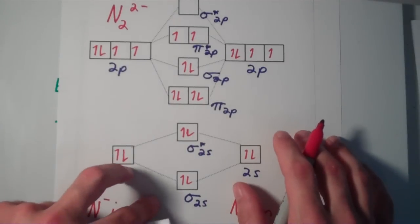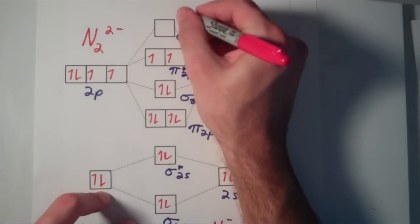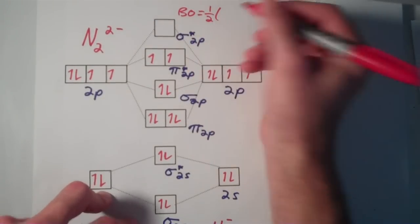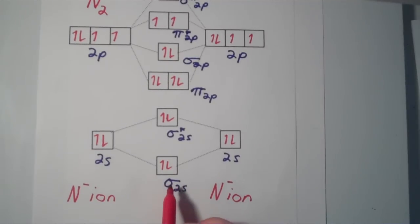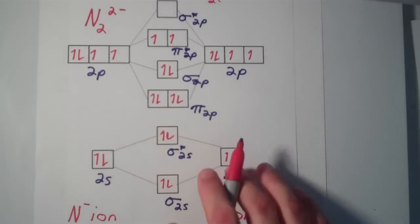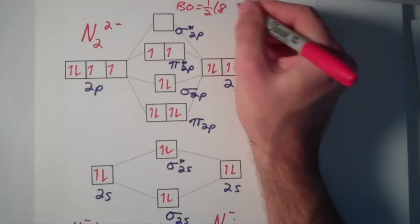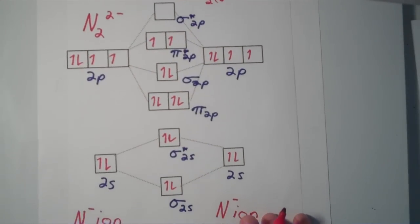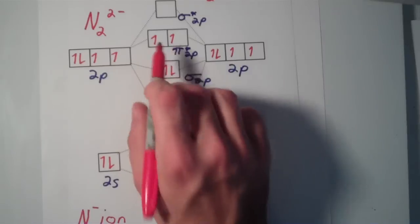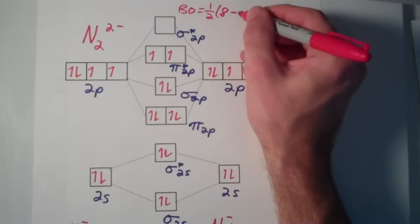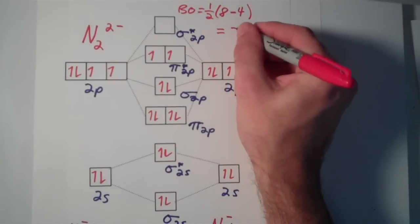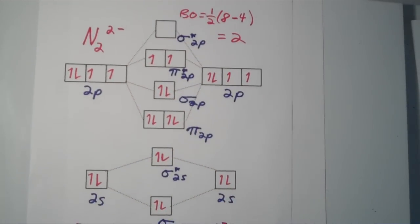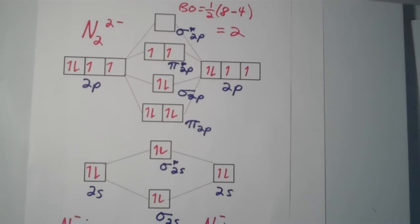So this is the molecular orbital diagram for the N2²⁻ ion. The bond order is one-half times bonding electrons minus antibonding electrons. We have 8 electrons in bonding MOs, and 4 electrons in antibonding MOs (2 in sigma* 2s and 2 in pi* 2p), so bond order = one-half of (8 minus 4) = one-half of 4 = 2. The N2²⁻ ion has a bond order of 2, so it's pretty stable and should exist in nature.